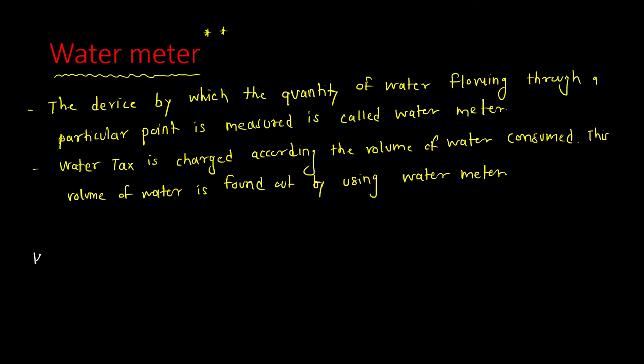This water meter has two types. The first one is called displacement type, and the second one is called velocity type.